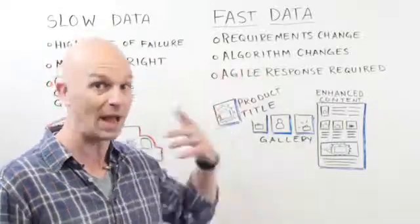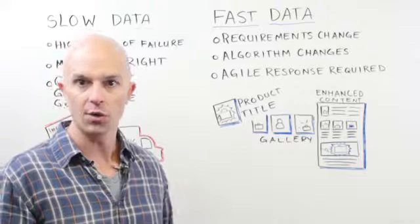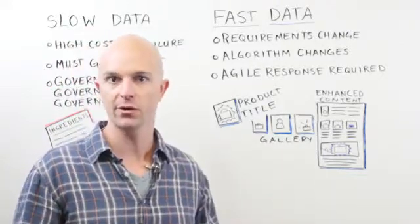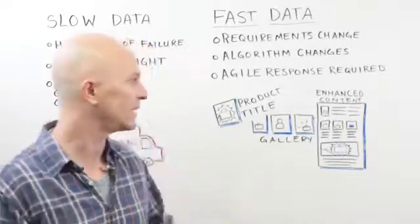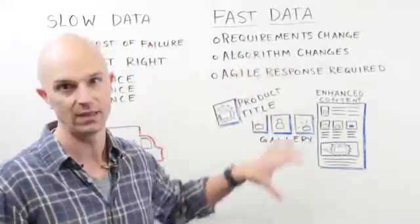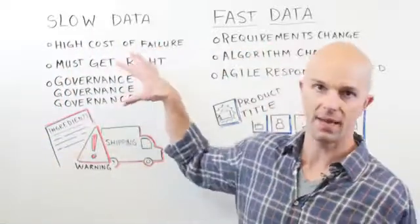And they're changing in ways that are not predictable to you. Agile responses are required. So the type of process that you need internally and the type of technology that you need internally to manage the e-commerce data that's so quickly changing and so volatile, it's different than what you need to manage slow data.